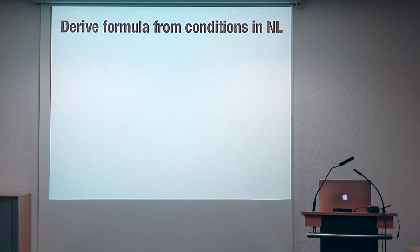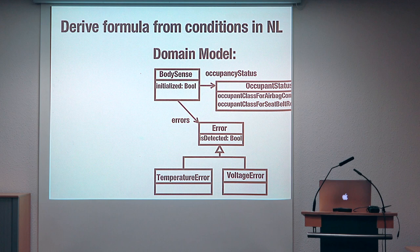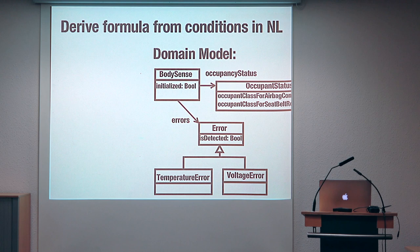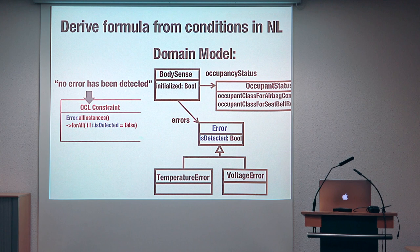Since our assumption is that we have a domain model of the system, the kind of formulas that we want to derive contain terms that are the concepts that appear in the domain model. The formulas we want to derive are written in the OCL language, which is the usual language used to specify properties of concepts in a class diagram, because a domain model is a class diagram whose classes represent higher-level concepts. For example, we want to automatically derive a formula that captures the meaning of the sentence 'no error has been detected', expressed as: for all instances of class Error, the property is_detected is equal to false.